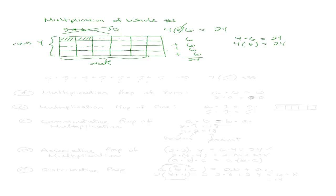Let's do some examples. Let's say I have 5 plus 5 plus 5 plus 5 — a repeated addition — and I want to write this as multiplication. If I can go from multiplication to repeated addition, I can go backwards as well. I have 5, but how many times do I have 5? I have 5 a total of 7 times. So this is the same thing as 7 times 5, which is 35. We should be able to go back and forth between repeated addition and multiplication.